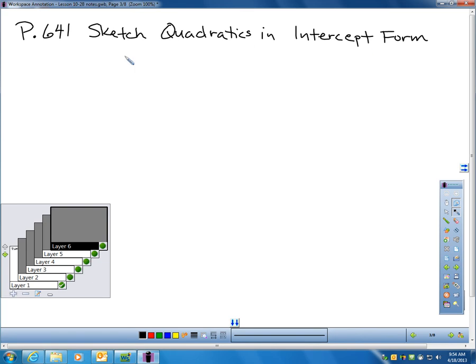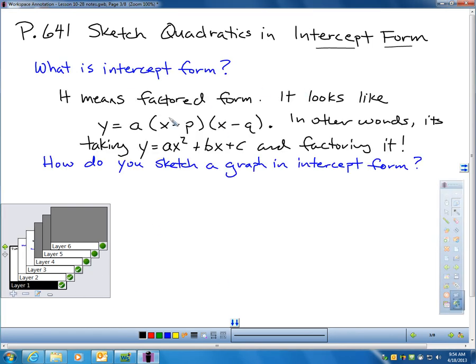So, sketching quadratics in what we call intercept form. Let's walk through that. Let's go through some specifics. I'm on page 641. What is intercept form? Intercept form means what we've already talked about. It's factored form. It looks like, generally speaking, y equals some number. We have two binomials, x minus a number and x minus a number. These are my binomials, two of them. In other words, it's just taking standard form.